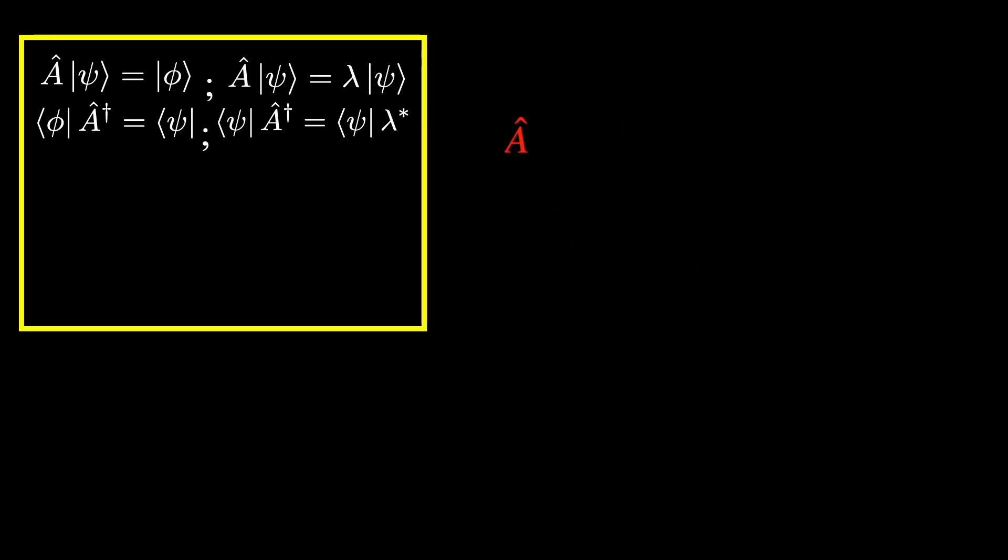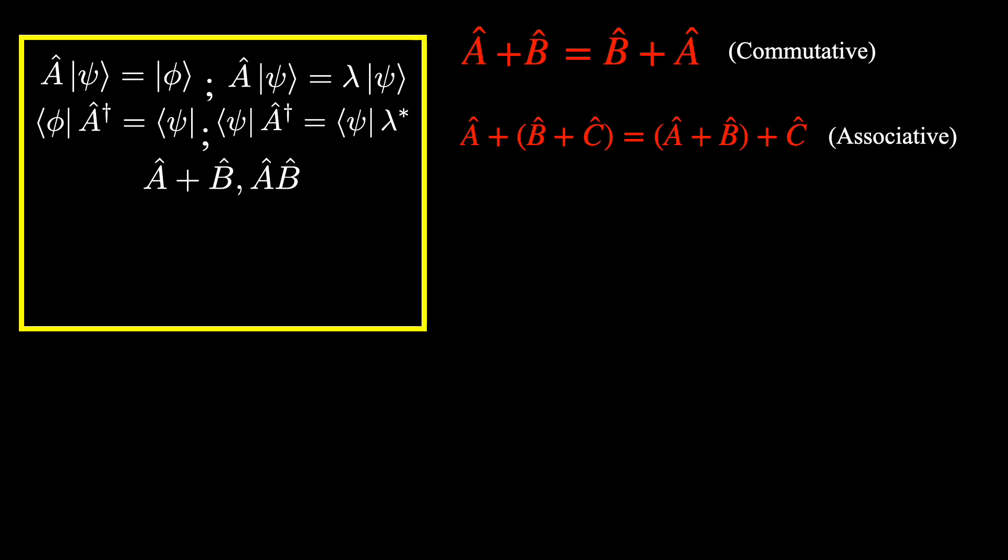Okay, so the next thing I'd like to discuss is how operators can be added or multiplied. In general, if you have three operators A, B, and C, the order you add them together does not matter. So addition of operators is both associative and commutative. However, when multiplying operators, multiplication is associative, but in general it is not commutative.